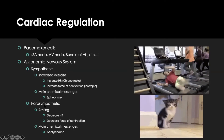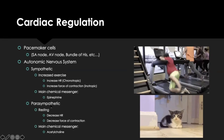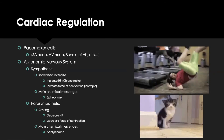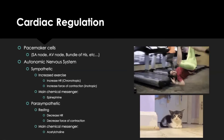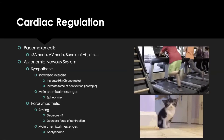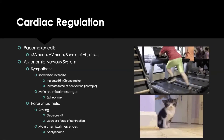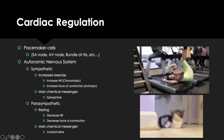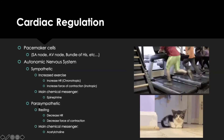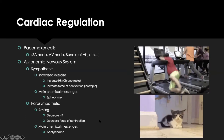Heart rate is regulated by the autonomic nervous system, divided into sympathetic and parasympathetic. Sympathetic occurs during increased exercise: it increases heart rate (chronotropic) and increases force of contraction (inotropic), with epinephrine as the main chemical messenger. Parasympathetic occurs at rest: it decreases heart rate and force of contraction, with acetylcholine as the messenger.